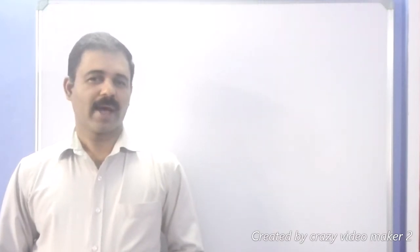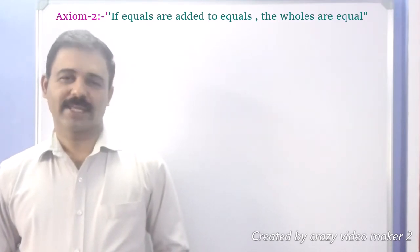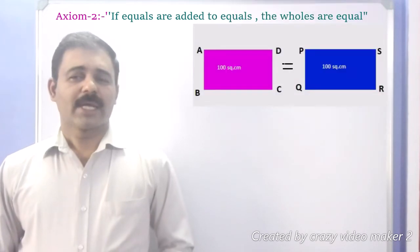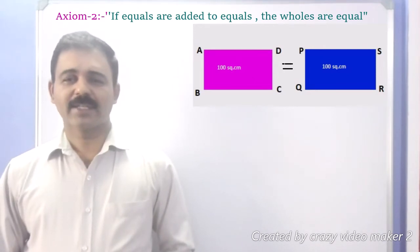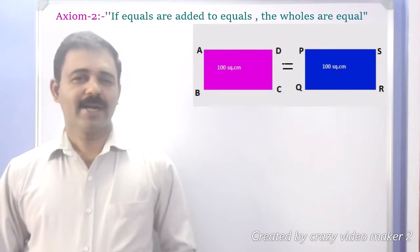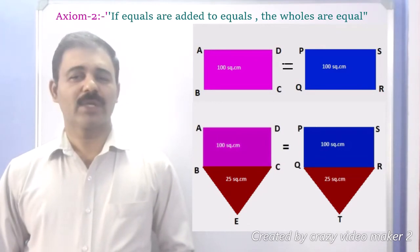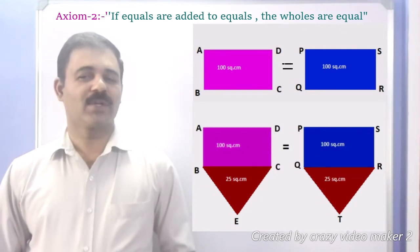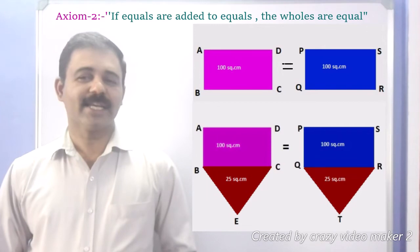Axiom 2 states that if equals are added to equals, the wholes are equal. Suppose you have two rectangles with equal areas — ABCD and PQRS are the two rectangles of equal areas. Add triangle BCD to rectangle ABCD and add triangle QTR to rectangle PQRS. If area of triangle BCD equals area of triangle QTR, then area of ABCDE equals area of PQTRS.